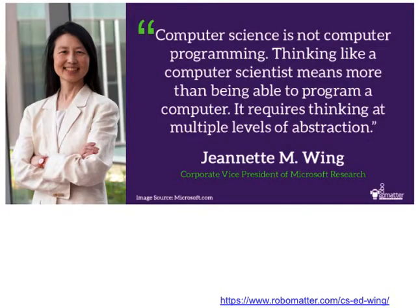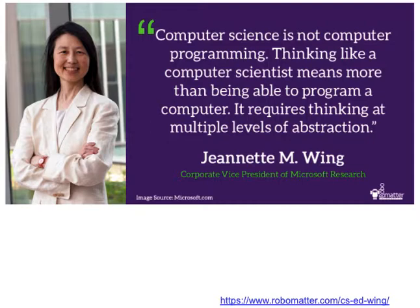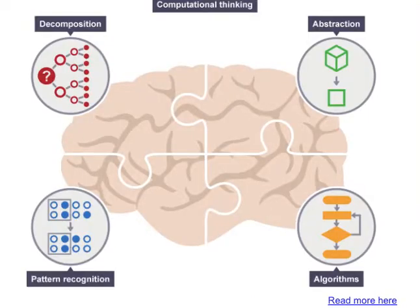Computational thinking is a term that was popularized by a woman called Jeanette Wing. Jeanette was not a journalist — she was interested in computer science — but what she saw was that there was a certain literacy that you needed to be able to work with computers, just as important as being able to read or work with numbers. She talks about thinking like a computer scientist being more than just being able to program a computer. Computational thinking is about thinking at multiple levels of abstraction, and it is often talked about in relation to four things: decomposition of particular problems, abstraction of certain parts of that, the ability to recognize patterns, and the ability to create algorithms.